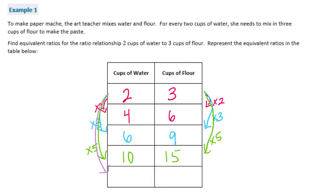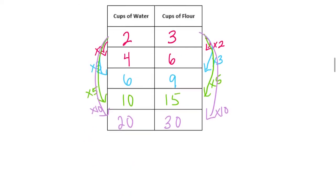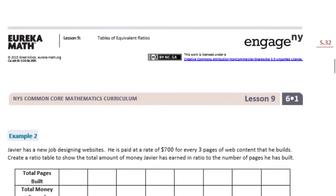And let's do one more. This time let's multiply by 10. You can multiply by anything. 2 times 10 is 20. And 3 times 10 is 30. So there are some equivalent ratios that you could have found. And there are many, many other possibilities. An infinite number of other possibilities, actually. So those are just some examples.